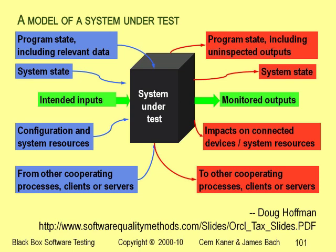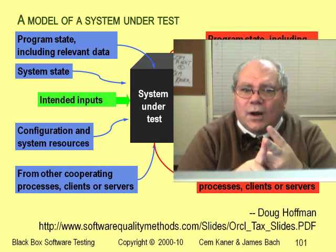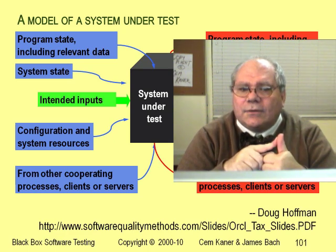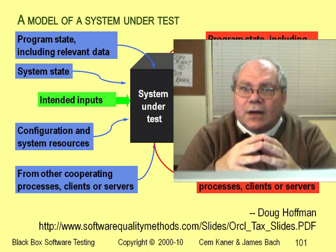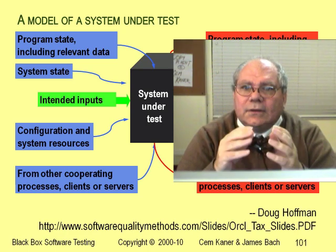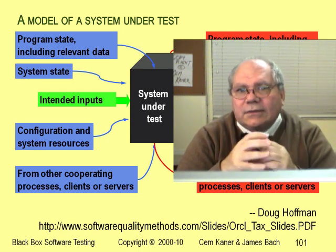When we specify a test, we specify inputs and look at outputs. For inputs, we can specify as much as we choose — usually some details of system configuration along with the specific data we feed to the program — but we always leave some things unspecified. When was the last time you saw a test that specified all the memory-resident programs, or how much free memory, free hard disk space, or what time of day and time of month to run the program? Usually these are irrelevant, but not always. That's one of the key causes of hard-to-reproduce bugs — the bug depends on something we're not aware of and not intentionally manipulating.